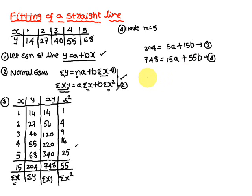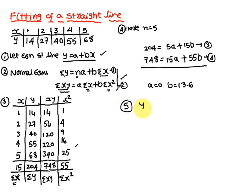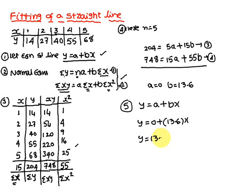Solving these two equations, you get a equal to 0 and b equal to 13.6. Therefore, substituting into the straight line equation yg equal to a plus bx, you get y equal to 0 plus 13.6x. Therefore, y equal to 13.6x is the straight line equation for the given data.